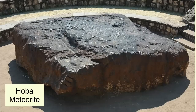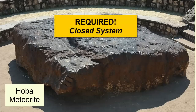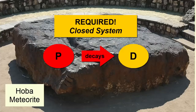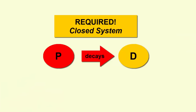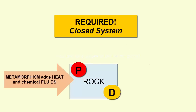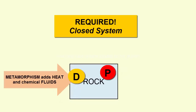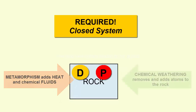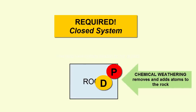Second step: we need to ensure the rock, shell, or bone fragment has remained a closed system. While parent decays into daughter, there must be no migration of parent or daughter isotopes into or out of the rock. Otherwise, the ratios we see do not reflect decay over the lifetime of the rock. For example, if a rock has undergone extensive metamorphism at high heat, atoms become mobile within the rock and can migrate in and out. Similarly, if a rock undergoes chemical weathering on its surface, minerals can break down and atoms can migrate in and out.